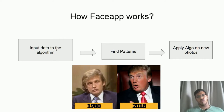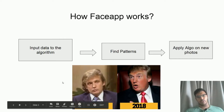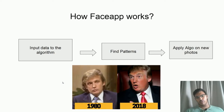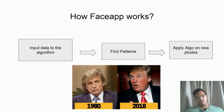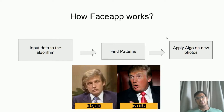They have created an algorithm trained on a bunch of images. For example, here you can see Donald Trump — how he looked in 1980 and how he looked in 2018. They feed the algorithm the younger and older images of a person, and the machine generates patterns from thousands of such images, which improves the algorithm's accuracy.